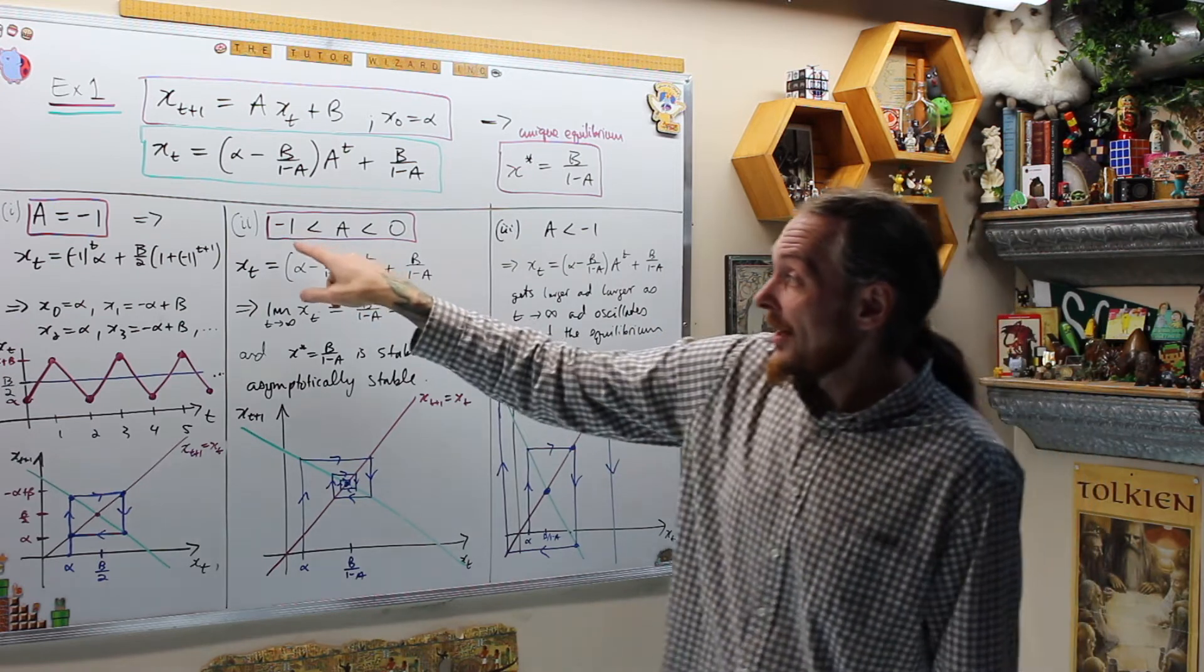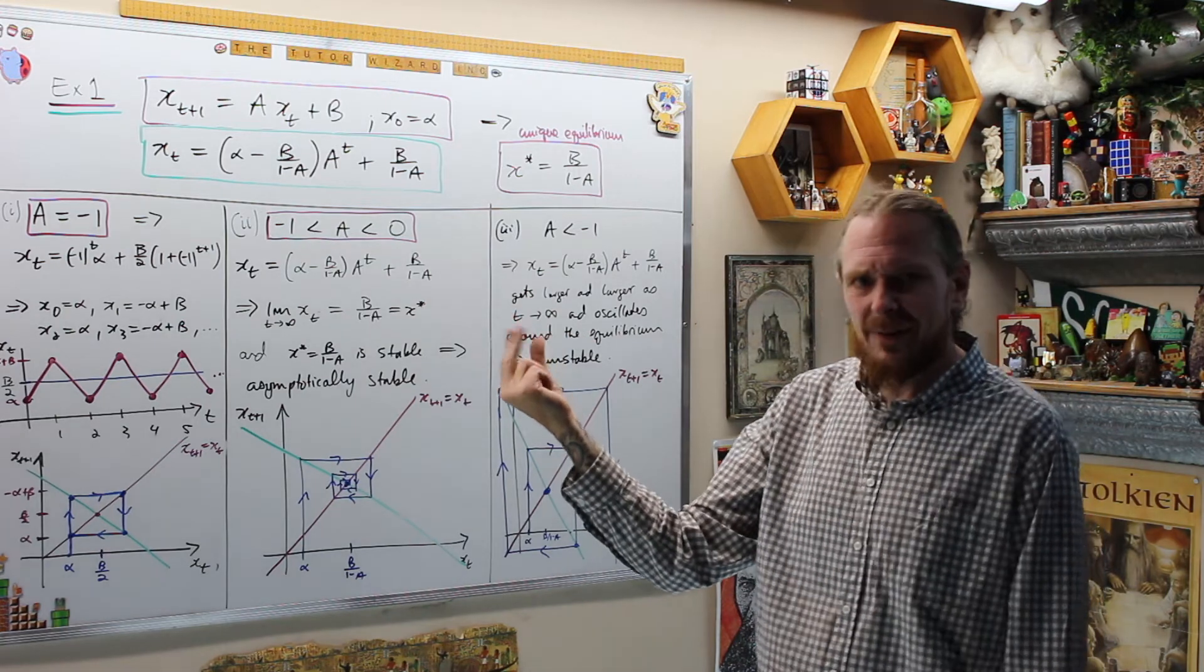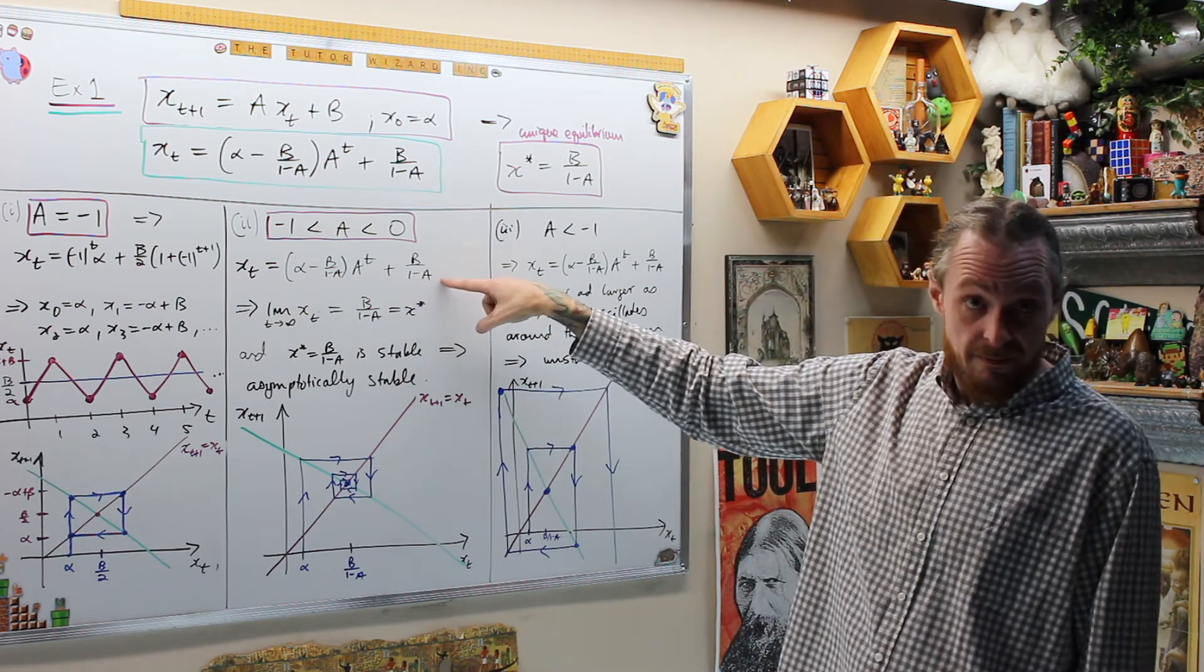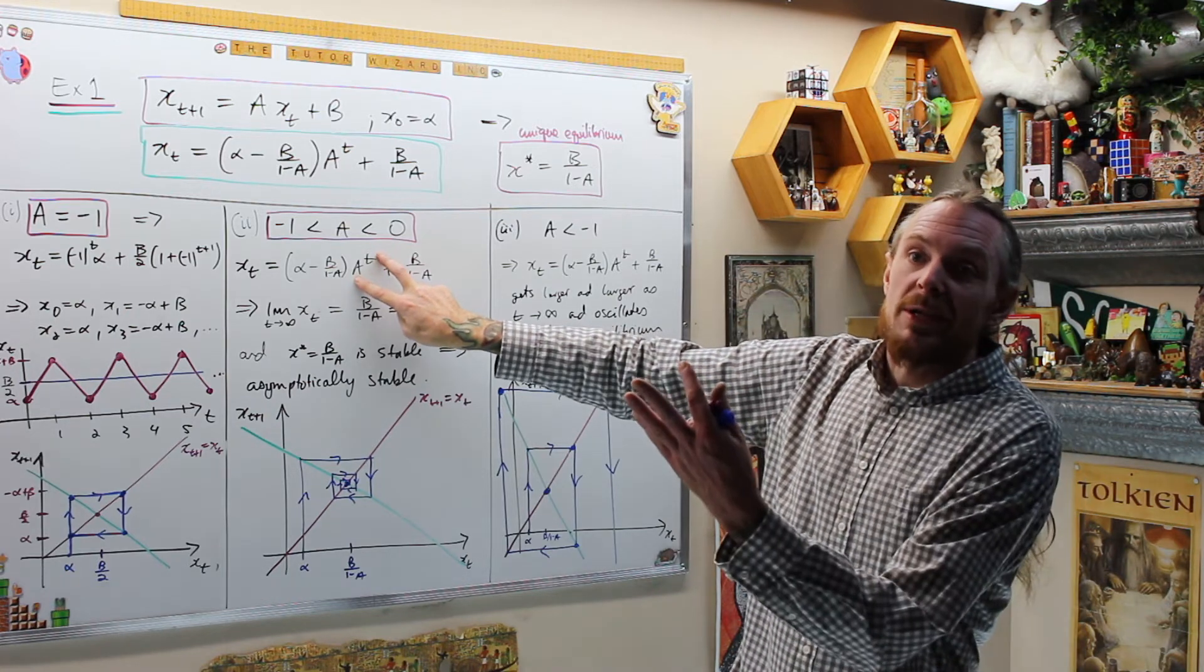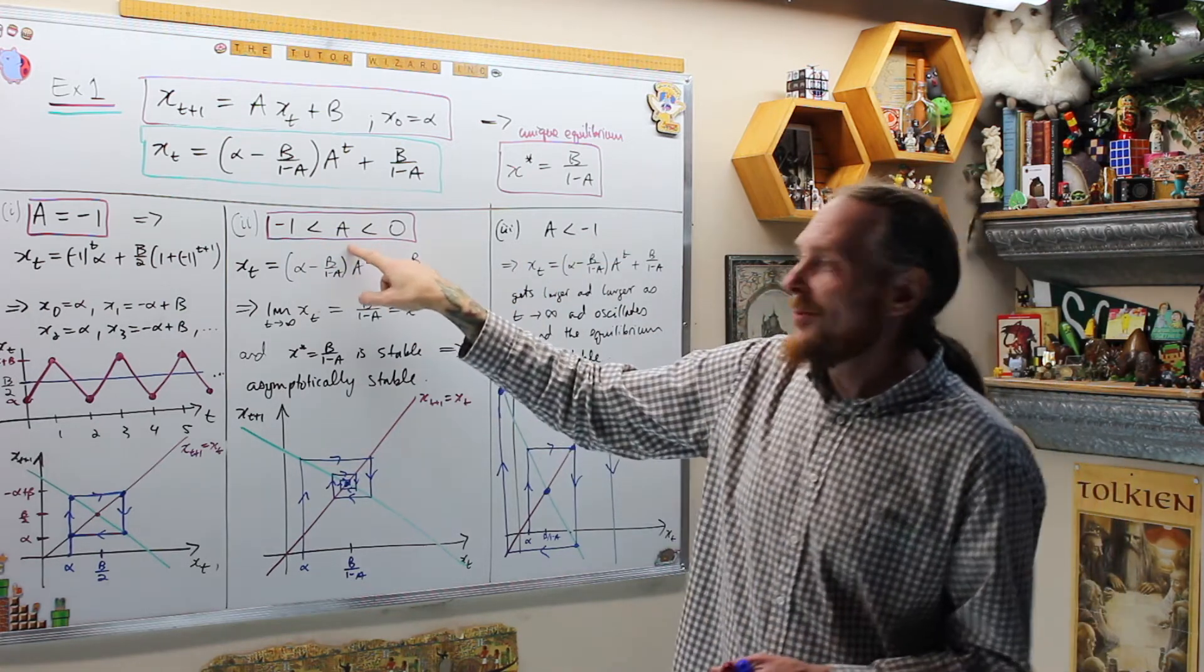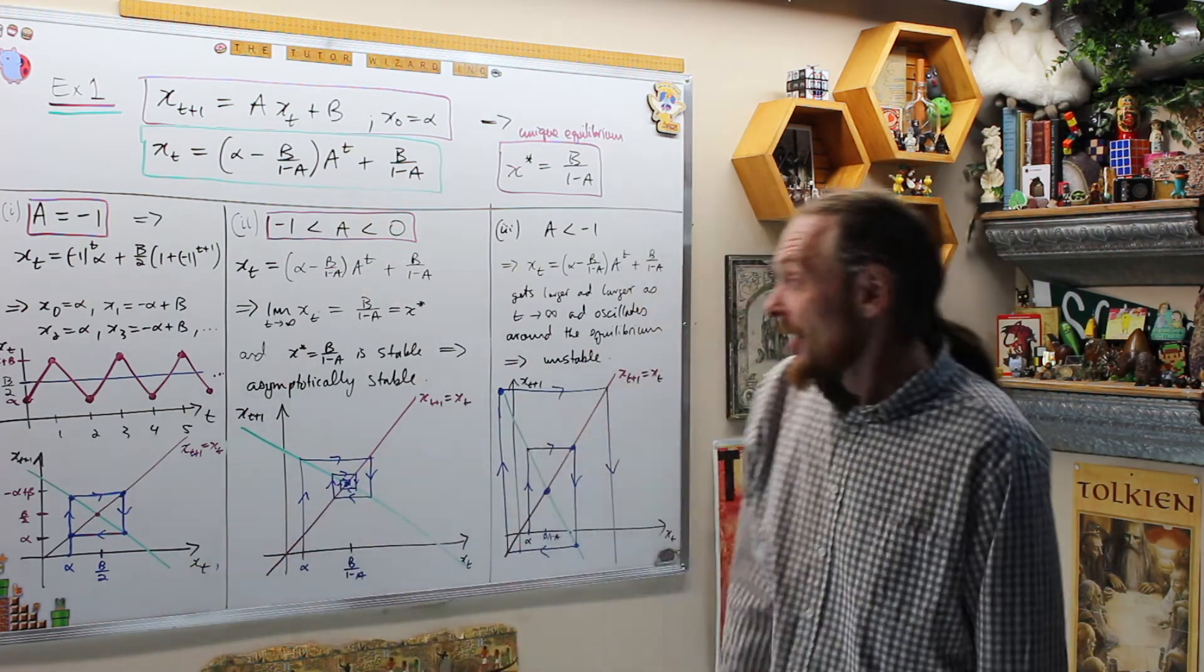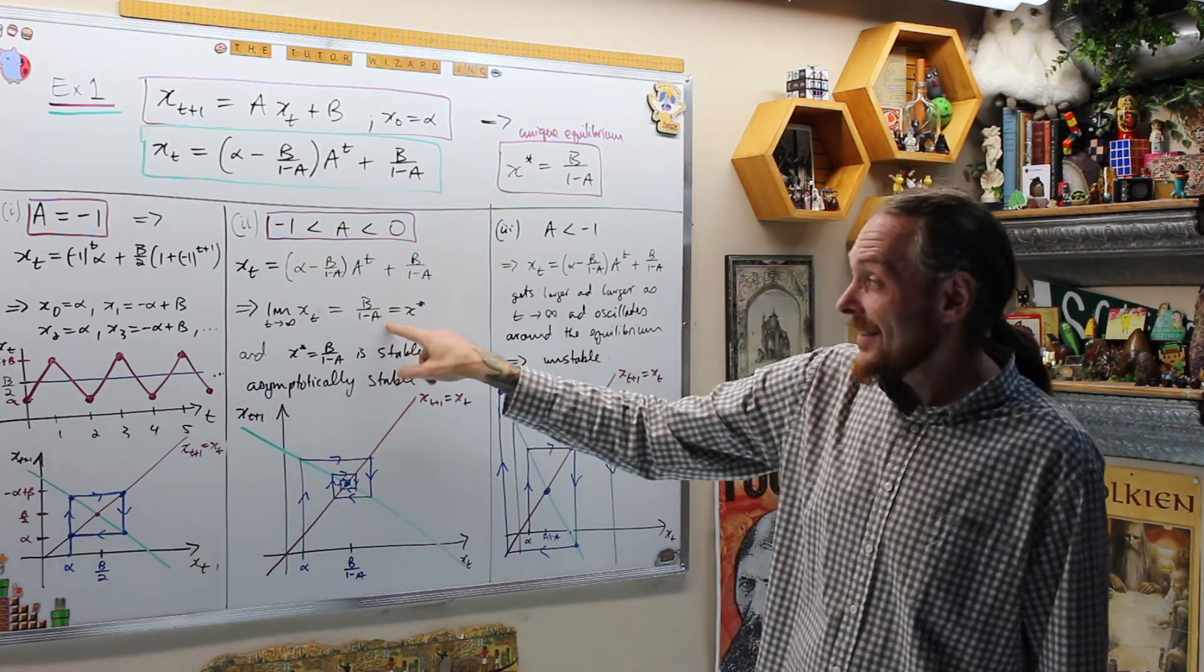If we go to the next case, where A is larger than negative one, but still less than zero, so a negative number, but a fraction, which is less than, its absolute value is less than one, then what we see is, again, I can get an explicit closed form for the solution. But now, if you focus on this guy, this is a number which is between negative one and zero. So if I take, think of negative one-half, and if I take negative one-half squared, I'm going to get one-quarter. Then negative one-half cubed is negative one-eighth, so it's going to get smaller and smaller and smaller. So what that tells me is the limit, this is going to go to zero, and the limit of x_t's is, in fact, my equilibrium, b over one minus a.